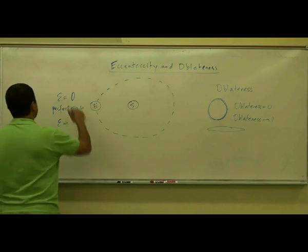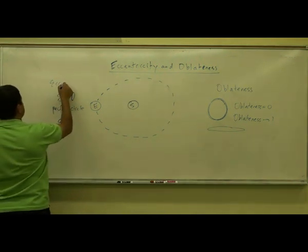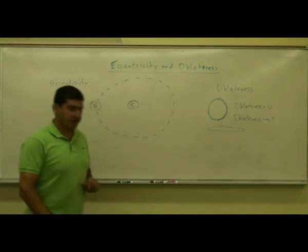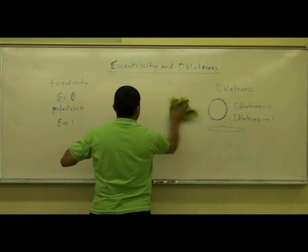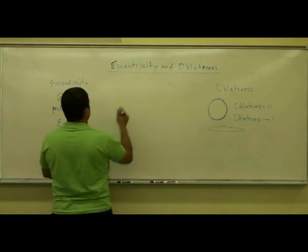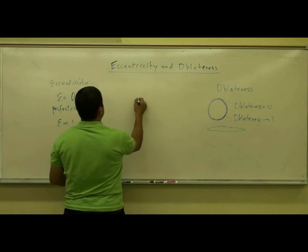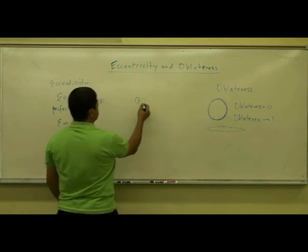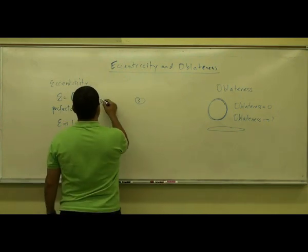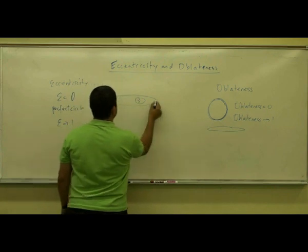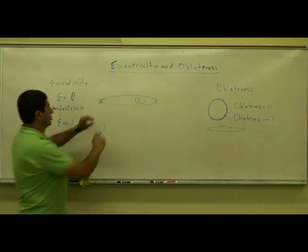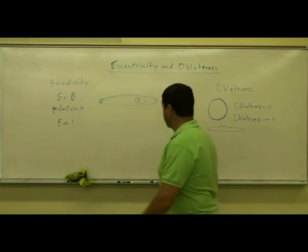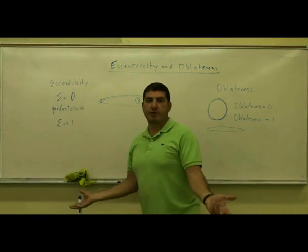The highest eccentricity you would have is also one. If the eccentricity is one, the planet's orbit would look like a straight line — the Sun is at one of the focal points, and the orbit of the planet looks like a straight line. So as the planet's orbit gets more and more elliptical, the orbit looks like a straight line.